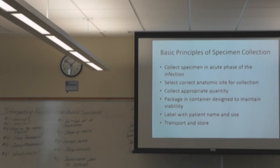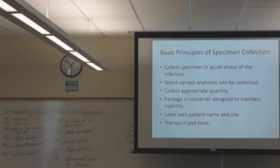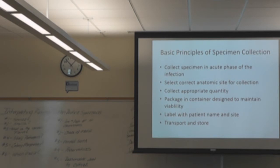Basic principles of specimen collection: the most important thing to remember is to collect the specimen in the acute phase of the infection, not after the patient has already been on antibiotics. Collect at the correct anatomic site, in the appropriate quantity if multiple tests need to be run, and package in a container to maintain viability. Label with patient name and site, then transport and store correctly.